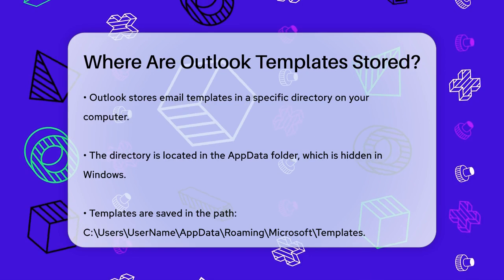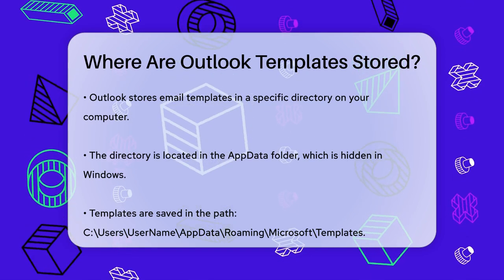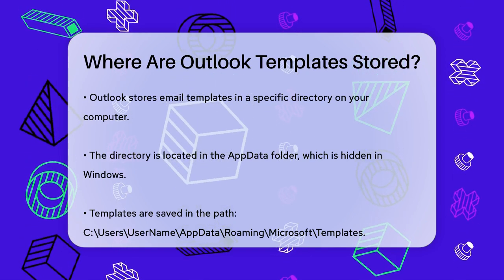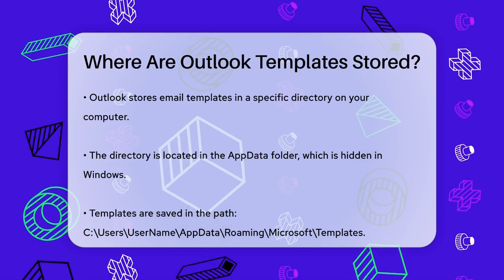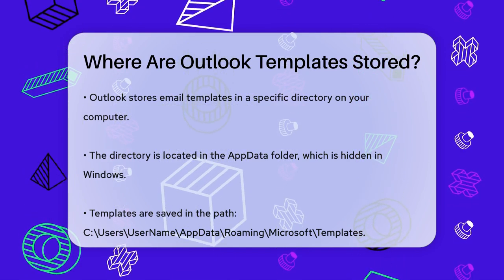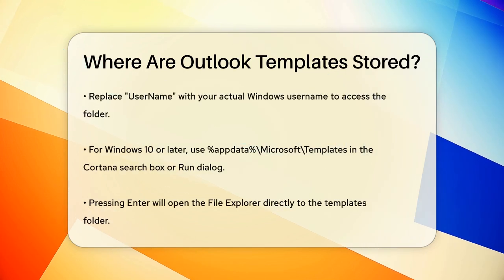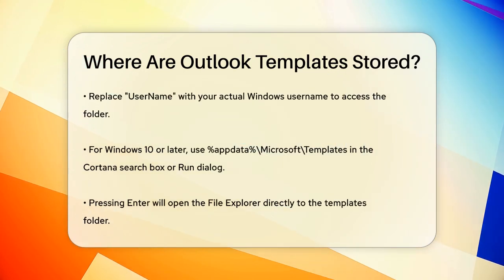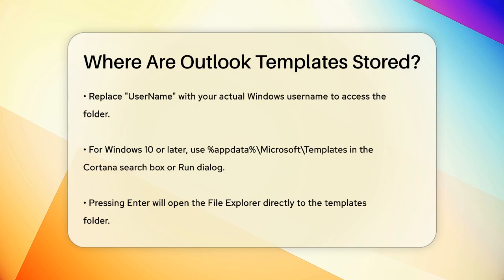This directory is usually found in the AppData folder, which is a hidden folder in Windows. To be precise, Outlook templates are saved in the C:\Users\Username\AppData\Roaming\Microsoft\Templates directory, where Username is your actual Windows username.